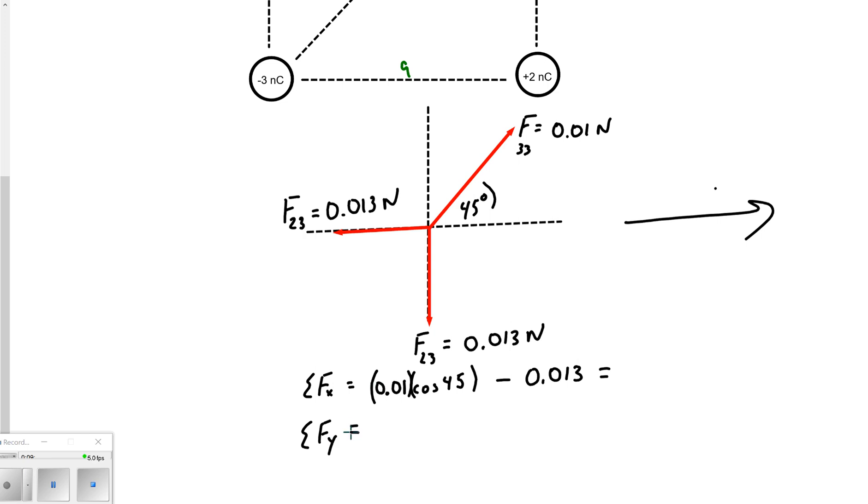0.01, all we've got here, cosine of 45 minus a 0.013 newton force. I'll clean that up. So there's our sum of the forces x. Our sum of the forces y would look like what? Well, what's pointing up?